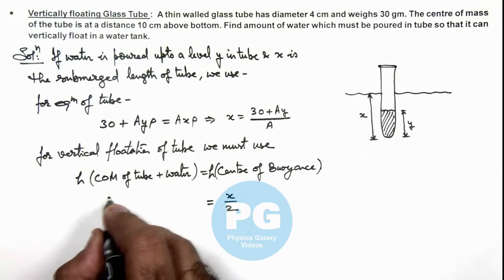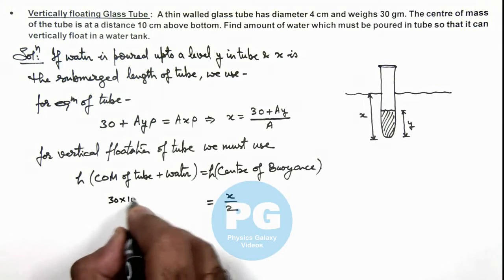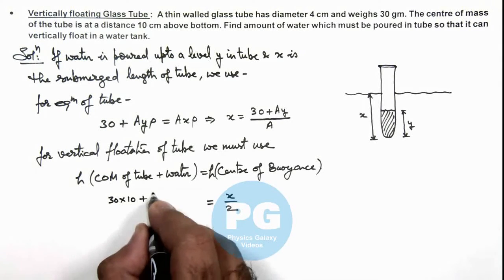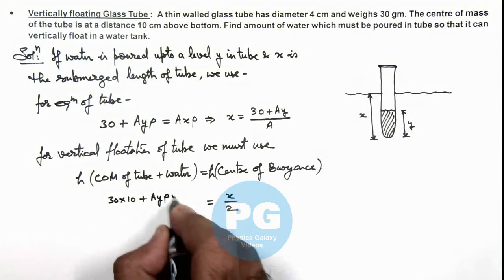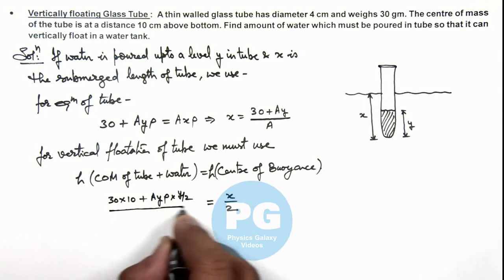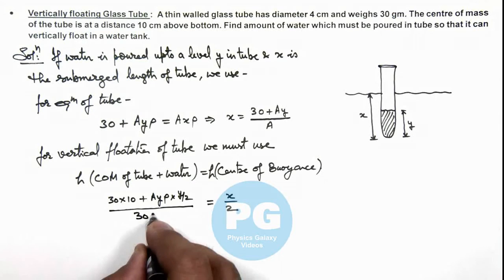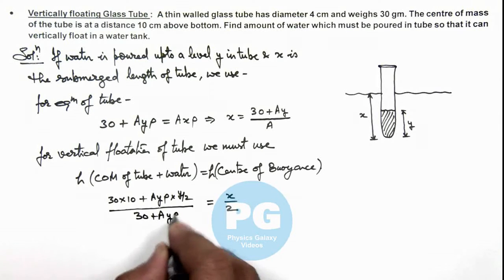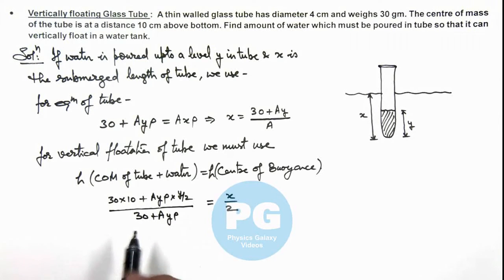So this will write as 30 multiplied by 10 plus A_y times y times rho multiplied by y by 2 divided by the total mass is 30 plus A_y times y times rho.